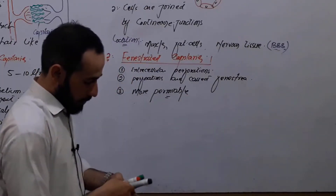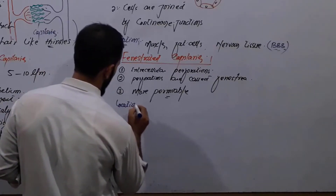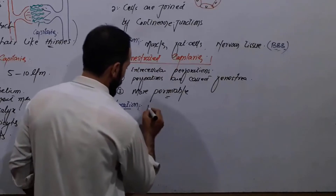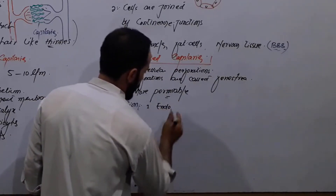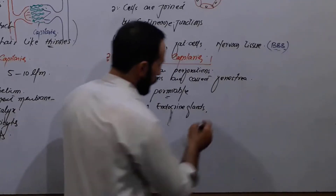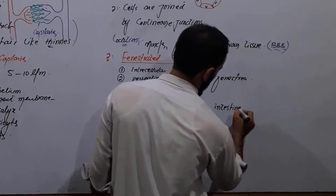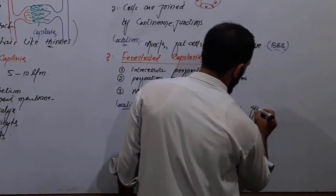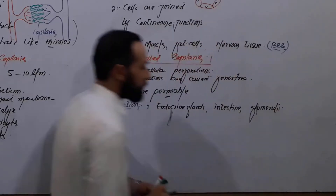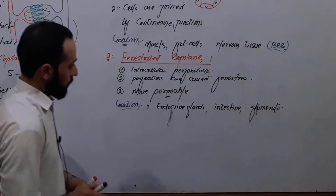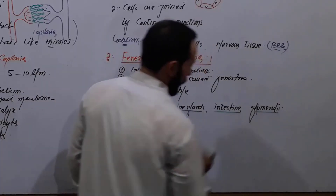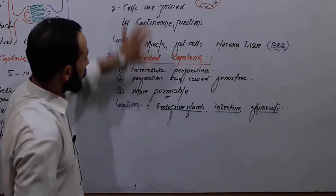What is the location of fenestrated capillaries? They are found where there is more exchange of substances. The first location is endocrine glands. These capillaries are also present in the intestines, and they are also present in the glomeruli of the kidneys. So fenestrated capillaries are present in glands, intestines, and glomeruli.